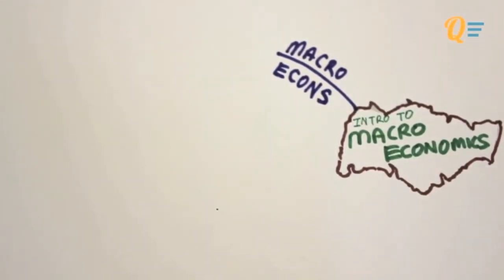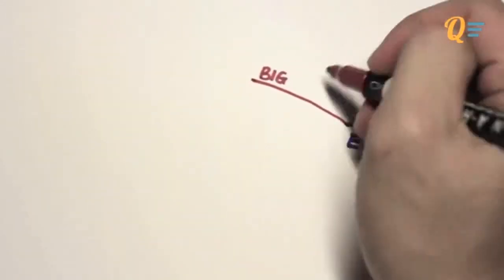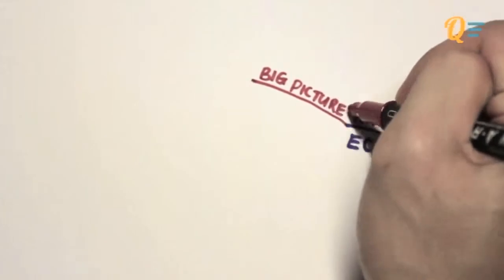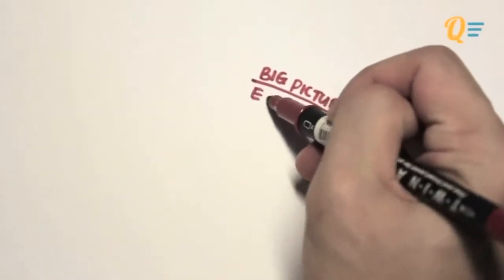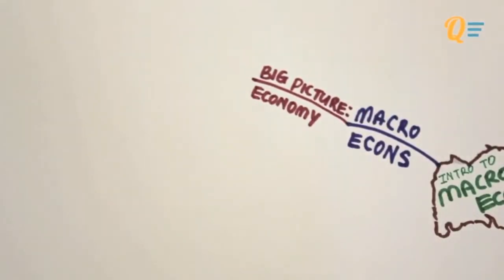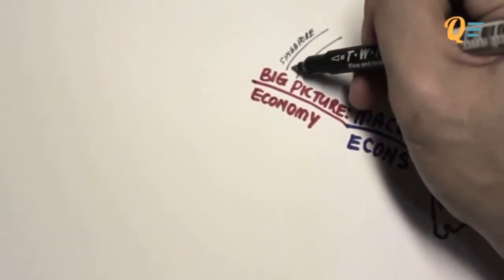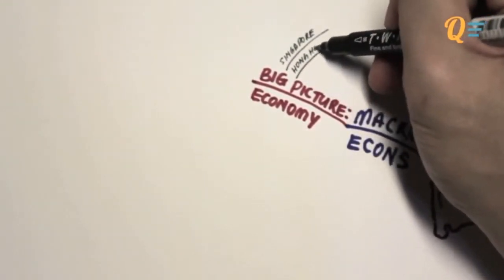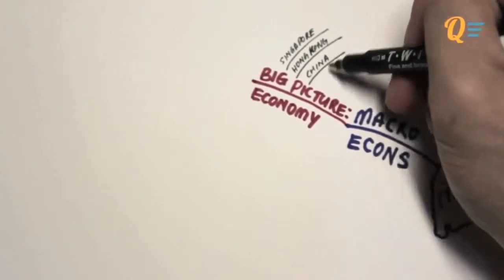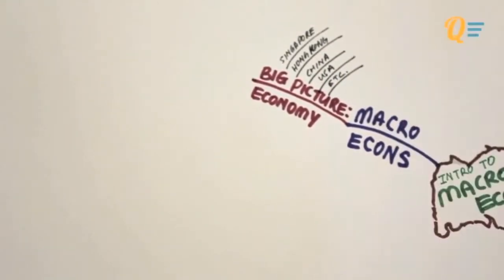In a nutshell, macroeconomics is looking at the bigger picture of the economy. An economy actually makes up of many different types of entities, and we're going to be seeing this in detail later. An economy is also known as a country — so for example Singapore, Hong Kong, China, the United States of America, etc.